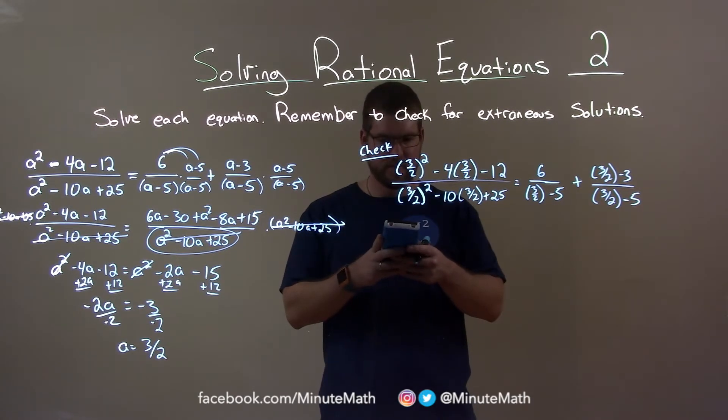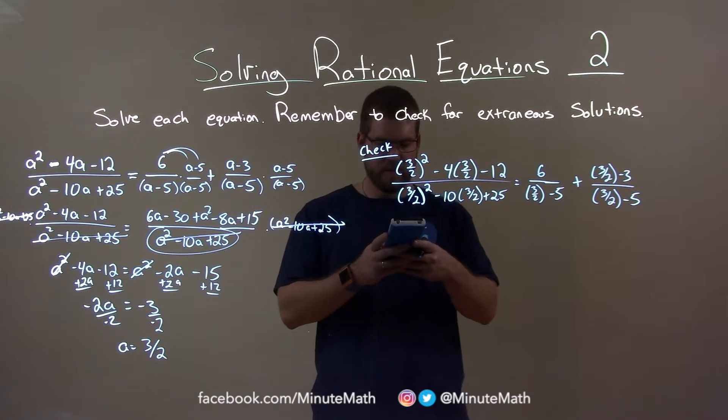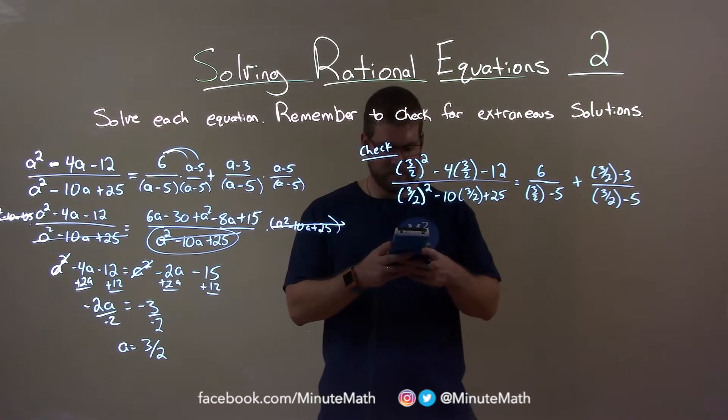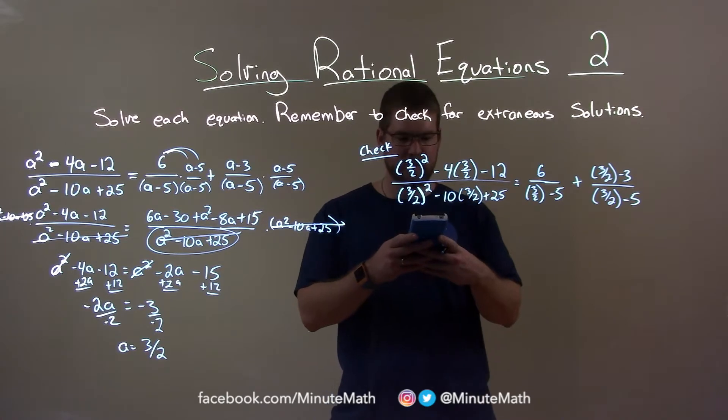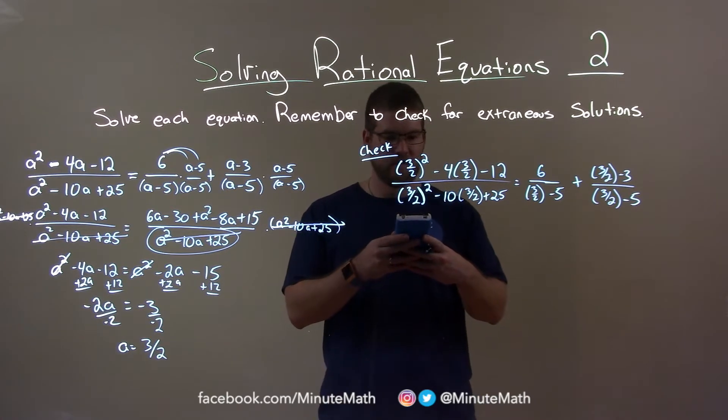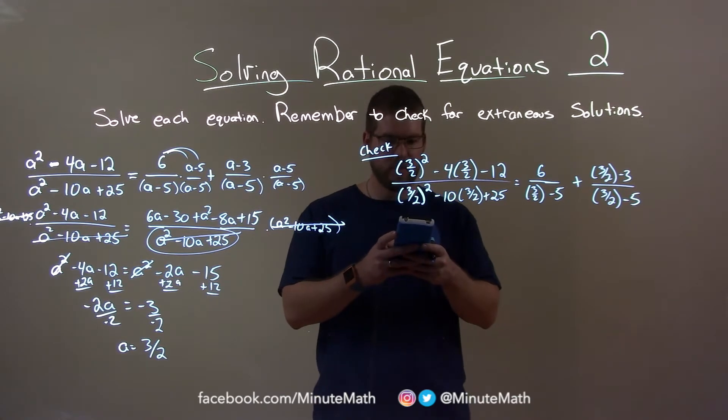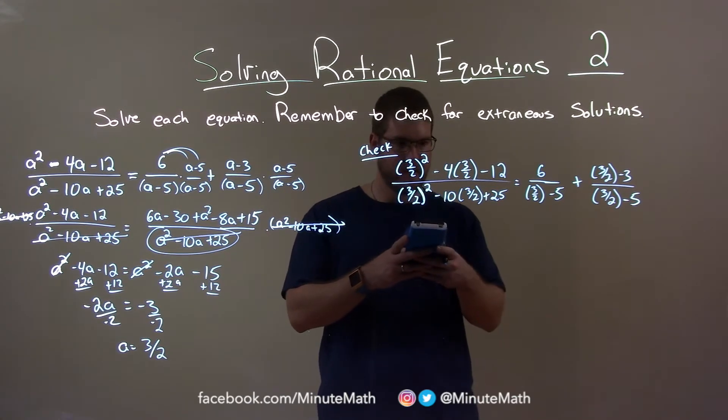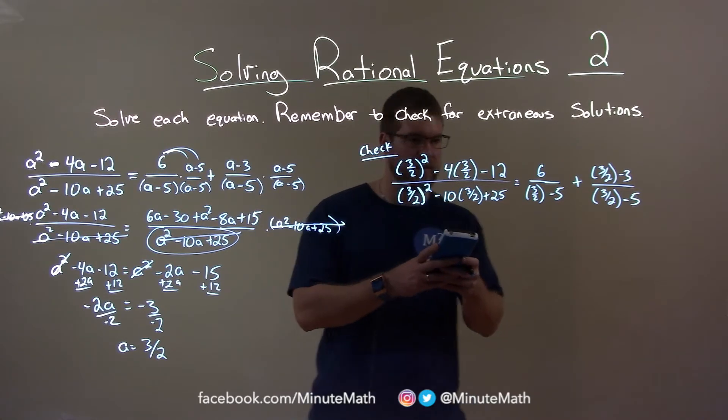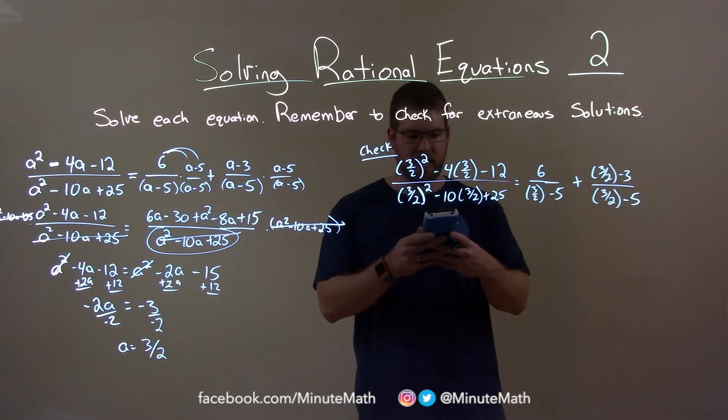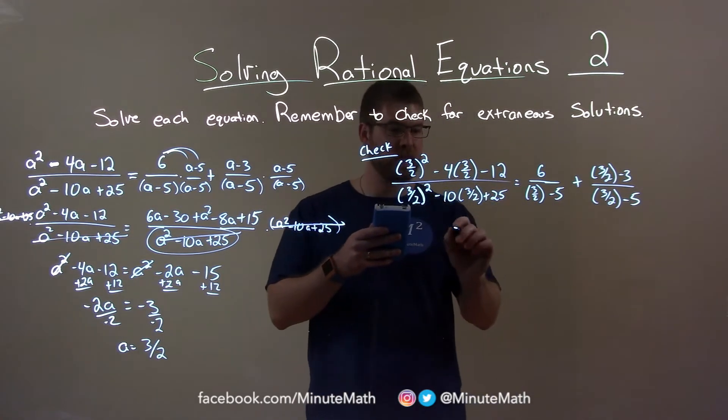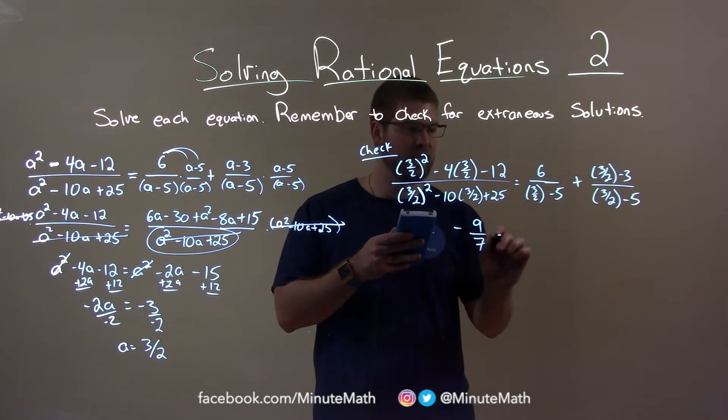Let's simplify what we can up here. 3 halves squared minus 4 times 3 halves minus 12, divided by 3 halves squared minus 10 times 3 halves plus 25. And this becomes a fraction of negative 9 sevenths.